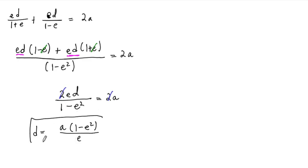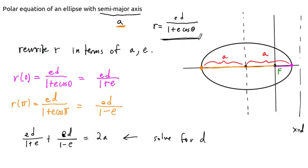So this is a formula for d, worked out geometrically from just looking at the properties of our ellipse, together with using the equation, the polar equation that we were given that involved d.